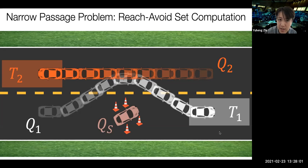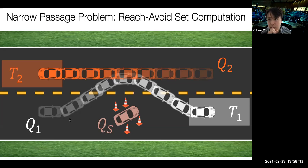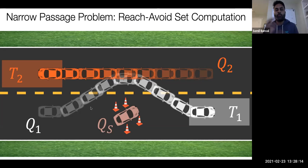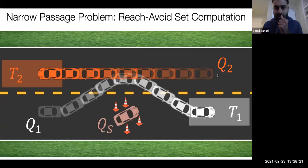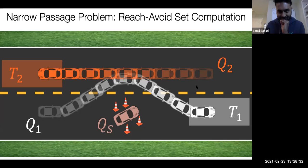A student asks: is the control space the control of both cars? Yes — the two vehicles are cooperating, so the overall control space is the control of Q1 plus Q2, with no disturbance in this cooperative setting. I will also show what happens in the non-cooperative case.